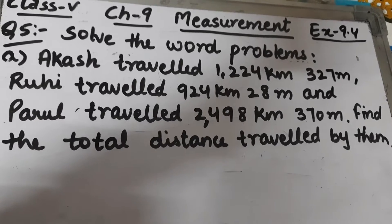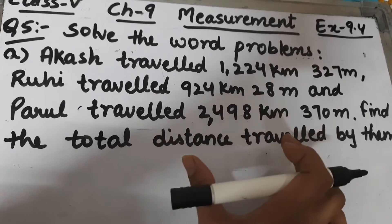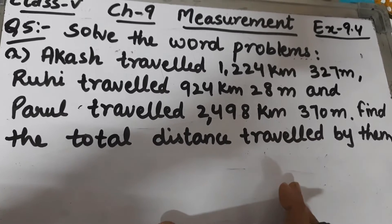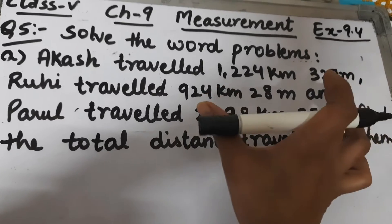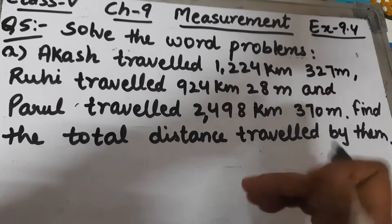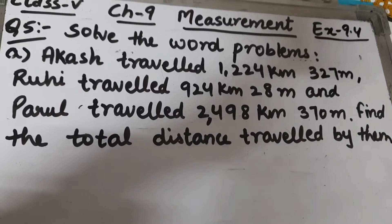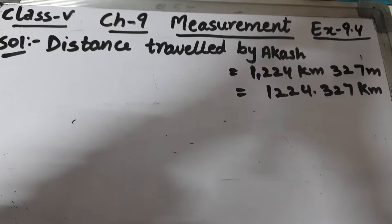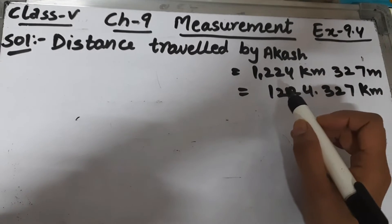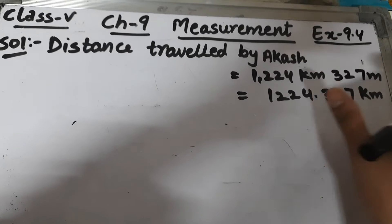The distances traveled by Akash, Ruhi, and Parul are given to us, and we have to find the total distance traveled by them. To find the total distance, we will add all the distances. So we will add the distance traveled by Akash, Ruhi, and Parul.